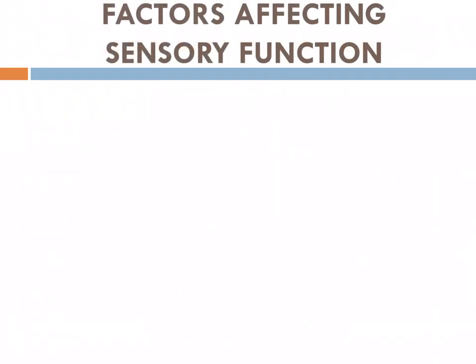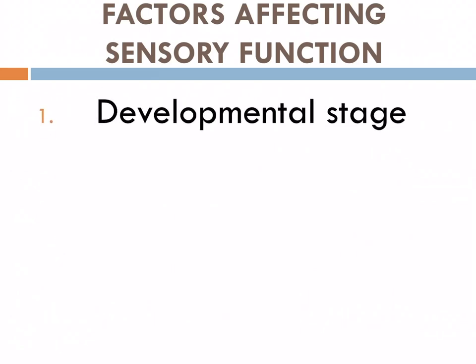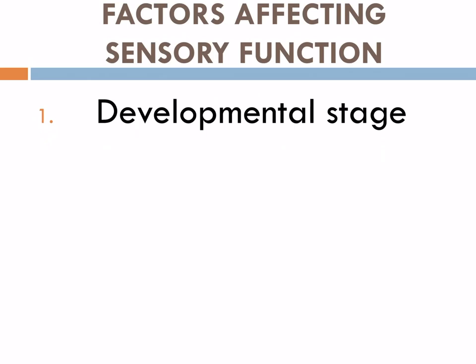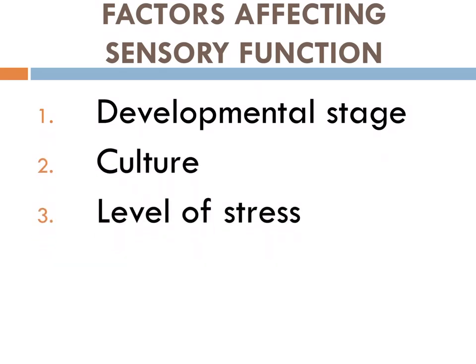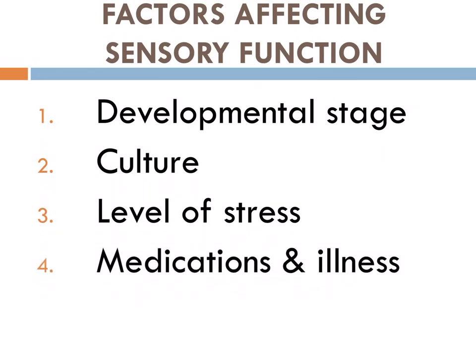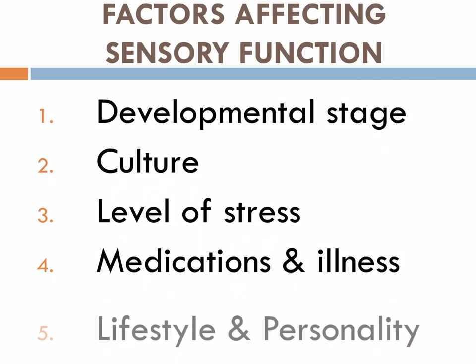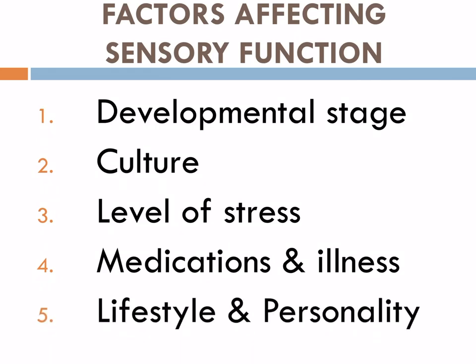Factors affecting sensory functioning include: development stage, culture, level of stress, medications and illness — which can be side effects of medication or signs and symptoms of disease — and lifestyle and personality. These five factors can greatly affect the sensory function of a person.